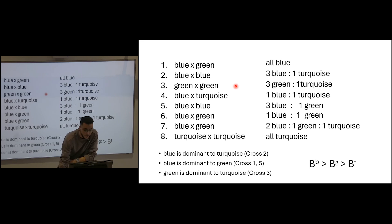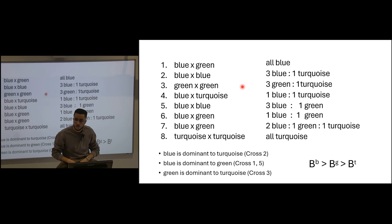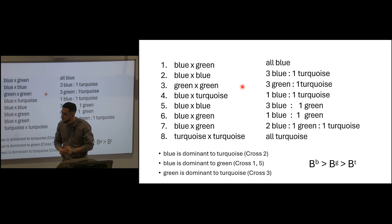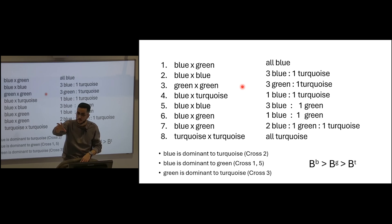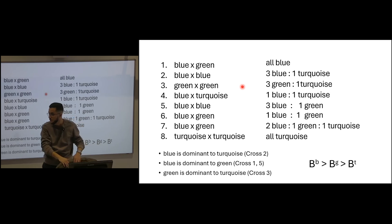Would you be able to figure out the crosses with the alleles? Second cross: blue and blue gives you 3 blue and 1 turquoise. How do we get 3 to 1 usually? We get it by doing a heterozygous with a heterozygous cross — one homozygous dominant, one homozygous recessive, and two heterozygous. The homozygous dominant with the two heterozygous are the same phenotype, so that's your 3 to 1 ratio. So how can blue cross blue give turquoise?